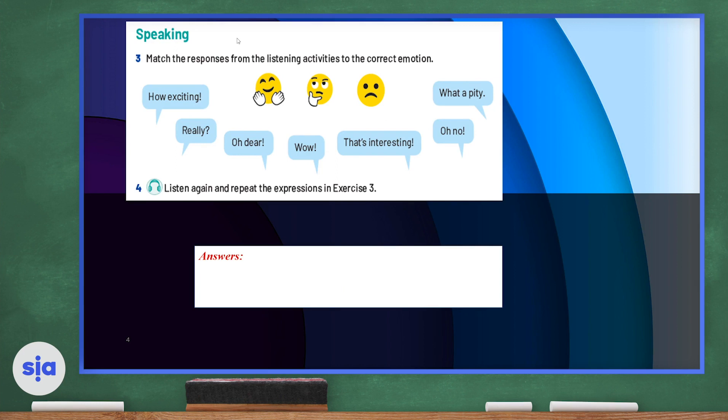Now I'd like you to match the responses from the listening activity to the correct emotion. We have 'how exciting,' 'really,' 'oh dear,' 'wow,' 'that's interesting,' 'oh no,' and 'what a good thing.' If you want to show that you're happy with the smiley face, you can say 'how exciting,' or 'wow,' or 'that's interesting.' But if you want to show that you're thinking about something or you're feeling surprised, you can say 'really.' And last but not least, you can show that you're sad by saying 'oh dear,' or 'oh no,' or 'what a pity.'